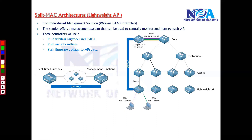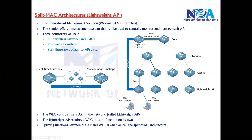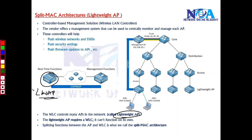Whenever you power on the access point, it contacts the WLC, and the WLC pushes the network settings and security settings like authentication credentials. Even firmware updates can be done from the single centralized device instead of doing them individually. The WLC controls the access points, and technically we call these access points lightweight access points because they don't handle complete functions — most management-related tasks are shifted to the centralized WLC.